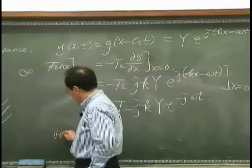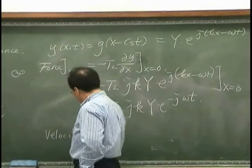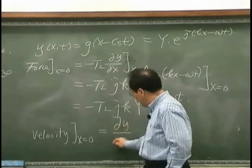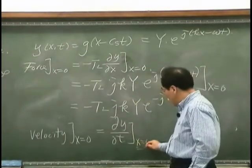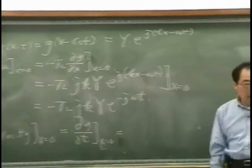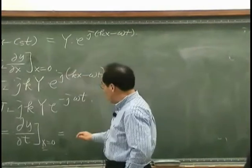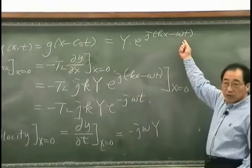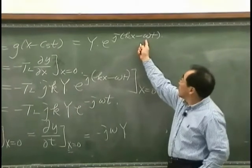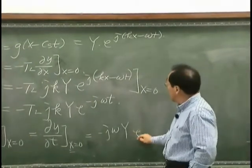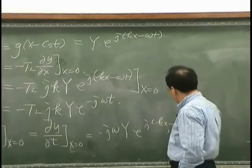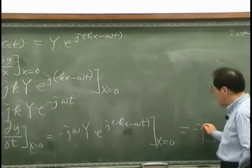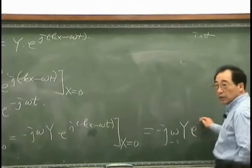And the velocity at x equals zero — by definition, velocity is the time rate of change of displacement. Since y has this form, differentiating with respect to time gives minus j·ω·Y·exp(j(kx − ωt)). Evaluated at x equals zero, that gives minus j·ω·Y·exp(−jωt).